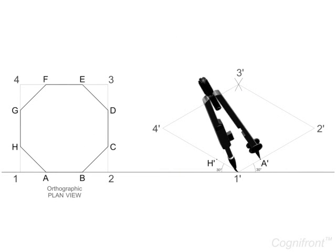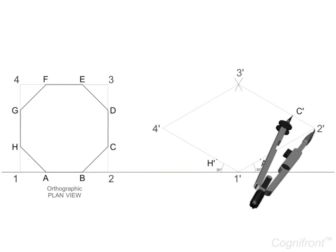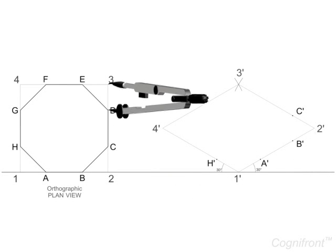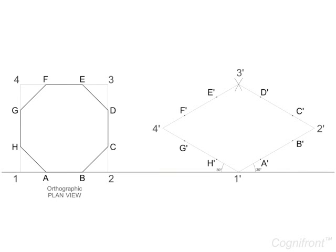Likewise, locate points F' and G'. By joining all these vertices, we'll get the isometric plan view of the octagon.